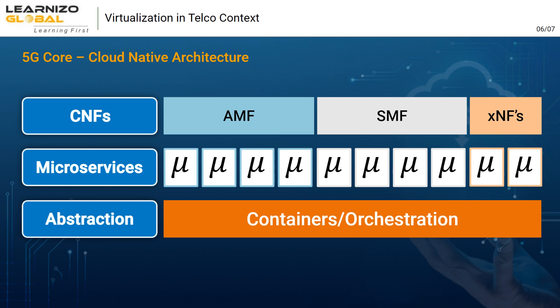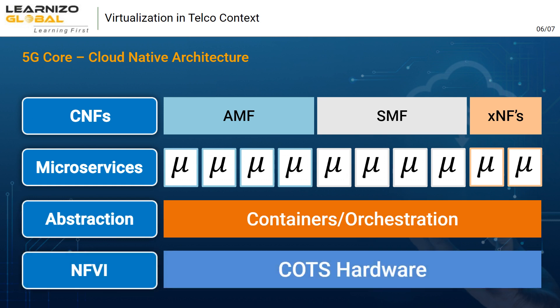For example, Docker, and can be orchestrated using tools like Kubernetes. Technologies like Docker and Kubernetes are becoming very important for 5G core deployment — this is called the cloud-native architecture of 5G core networks.